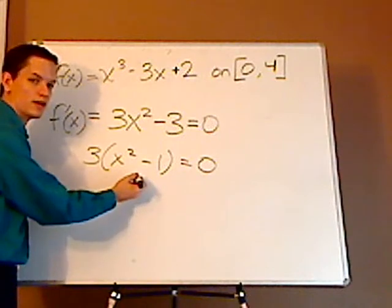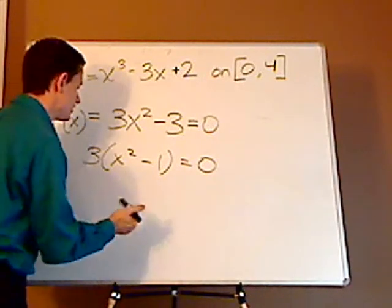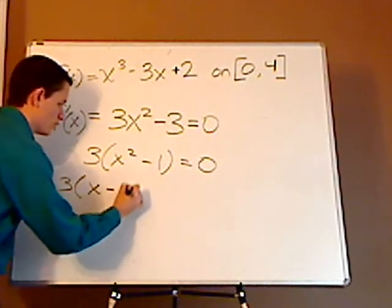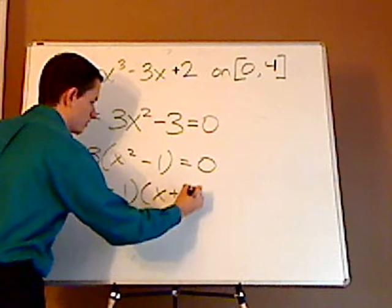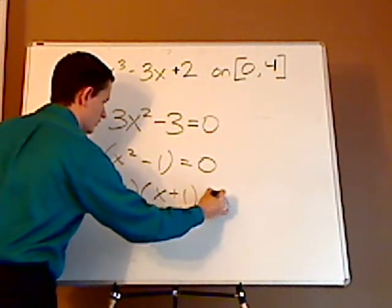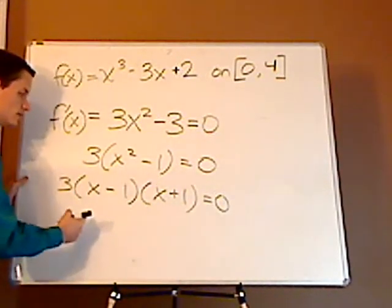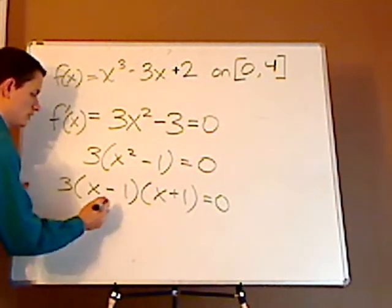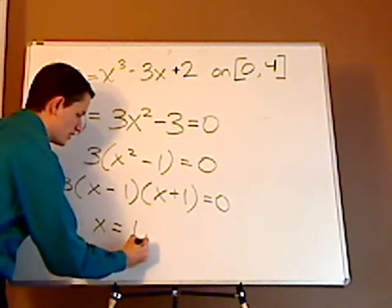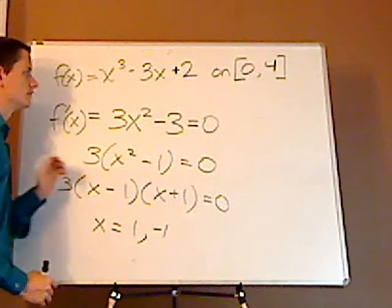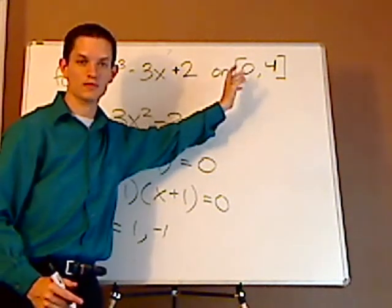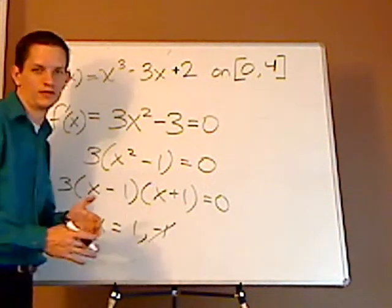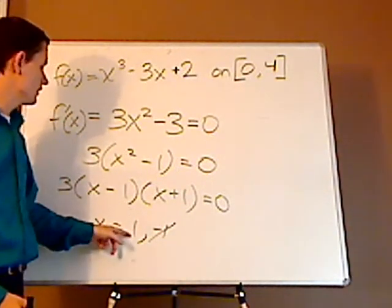This, x squared minus 1, is the difference of squares. So you can factor it this way: I'm going to keep the 3 here. It'll be x minus 1 times x plus 1 equals 0. I'm going to get critical values by setting these both equal to 0. So x equals positive 1 and negative 1. Since I'm only dealing with the interval from 0 to 4, I can cross off the negative 1 because I'm not going to use it.